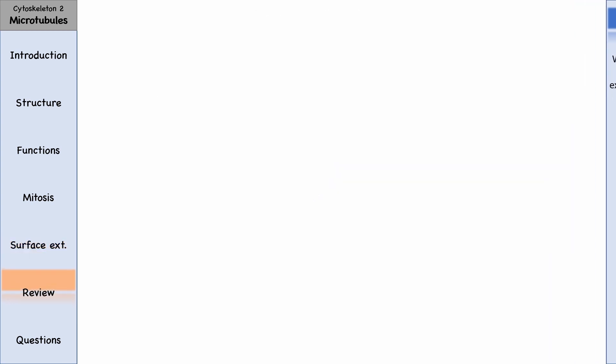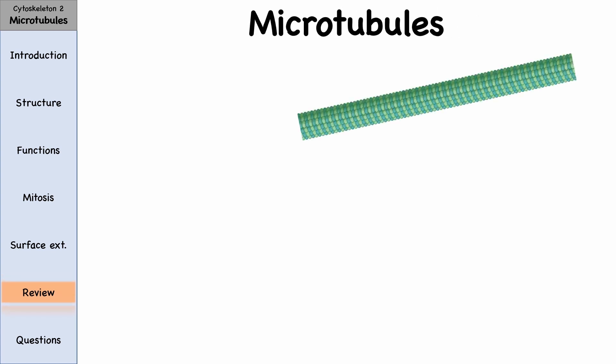Now let's do a quick review. Microtubules are the largest among the cytoskeletal proteins. They consist of proteins called alpha-tubulin and beta-tubulin.